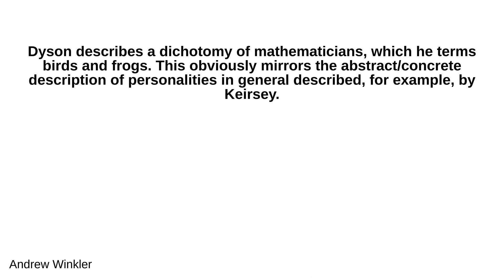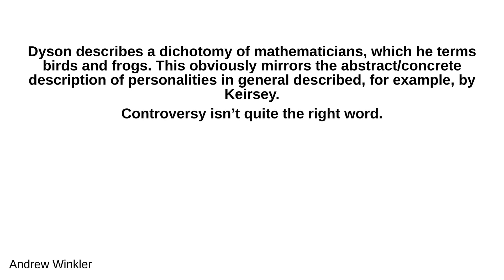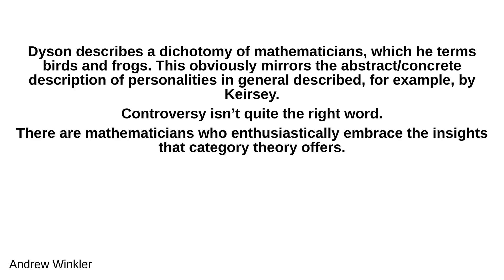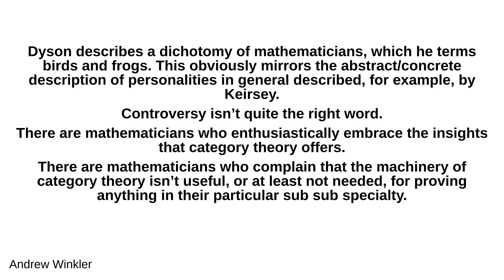Dyson describes a dichotomy of mathematicians, which he terms birds and frogs. This obviously mirrors the abstract/concrete description of personalities in general described, for example, by Kiersey. Controversy isn't quite the right word. There are mathematicians who enthusiastically embrace the insights that category theory offers. There are mathematicians who complain that the machinery of category theory isn't useful, or at least not needed, for proving anything in their particular sub-sub-specialty.